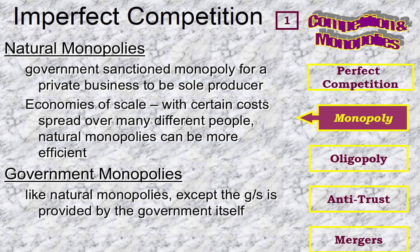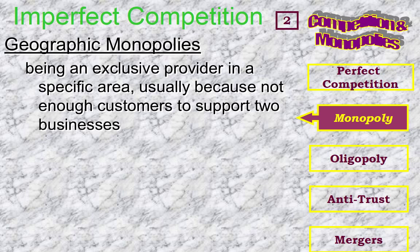There's also the idea of geographic monopoly — simply because you're an exclusive provider in an exclusive area, simply because there's not enough customers to support two businesses, or it hasn't been discovered as a way to expand in the industry. Examples would be restaurants way back in the countryside that do not have additional competition solely because there's just not enough clientele around to supply enough business for both of them to survive.